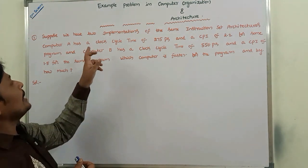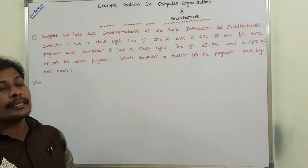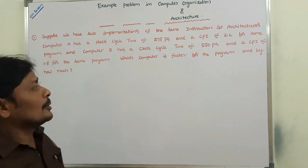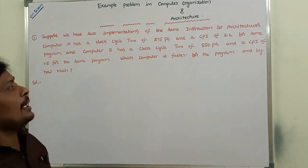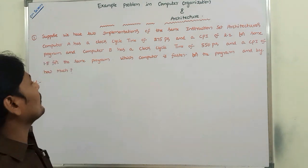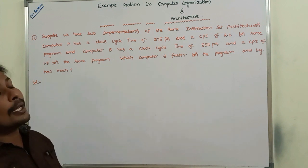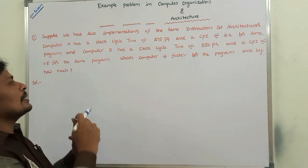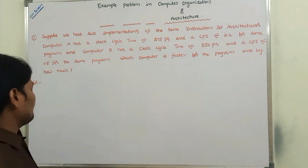Computer A has a clock cycle time of 275 picoseconds and a CPI of 2.2 for some program. Computer B has a clock cycle time of 550 picoseconds and a CPI of 1.5 for the same program. Which computer is faster for this program, and by how much?